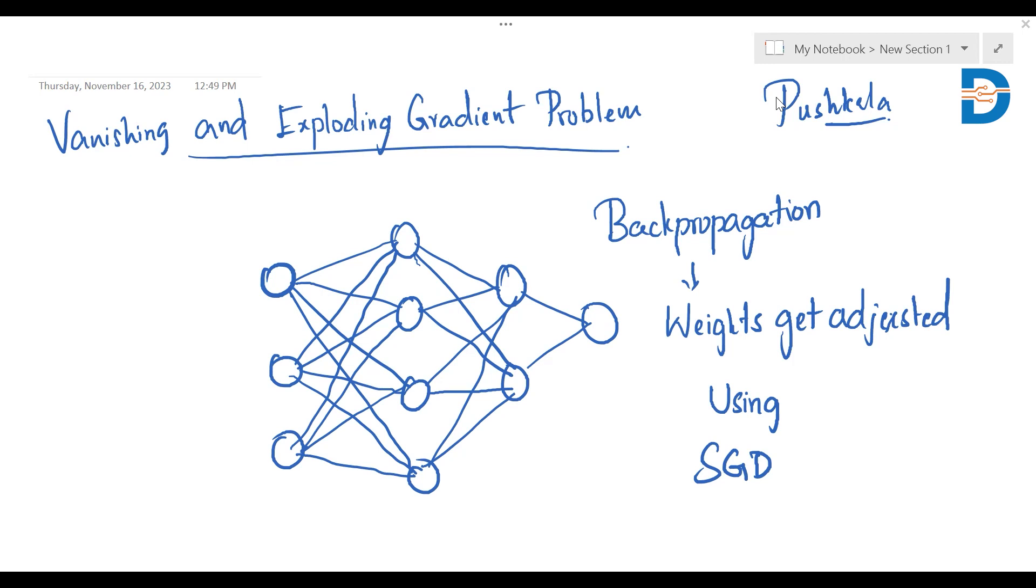So before starting into the vanishing and exploding gradient problem, we first have to know how this gradient problem might occur. So for that, let's say this is my neural network.